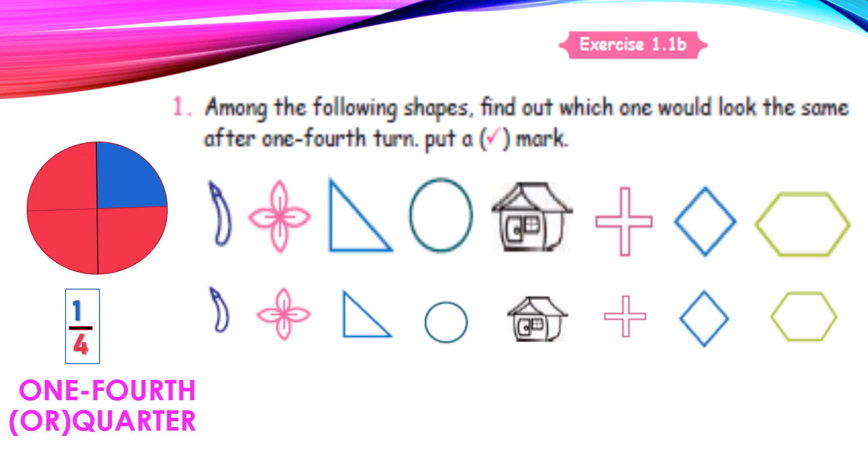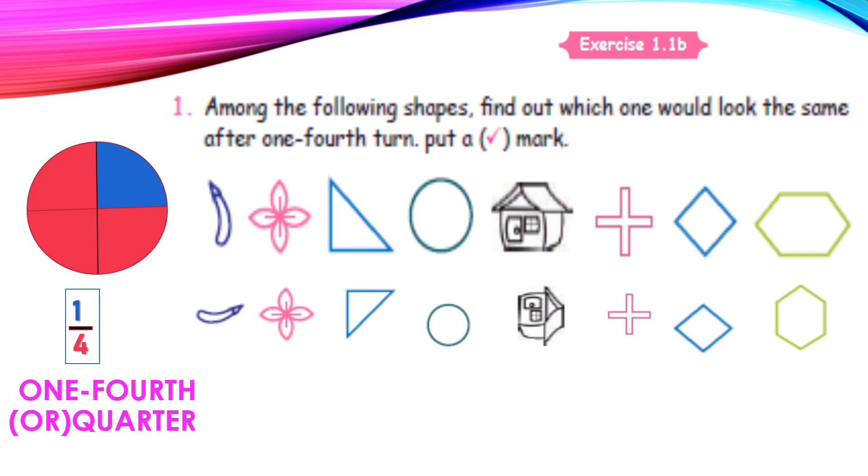First, bridge all. It's one-fourth turn. Next, flower. Triangle. Circle. House. Plus symbol. Diamond. Hexagon. So one-fourth turn.